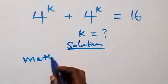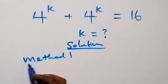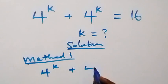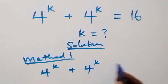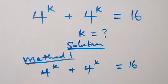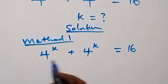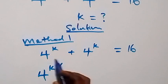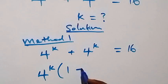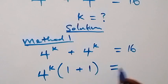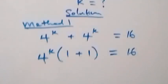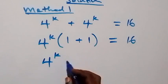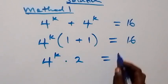Method 1: We have 4 raised to power k plus 4 raised to power k equals to 16. Let's factor 4 raised to power k out. So we have 4 raised to power k into bracket, and we are left with 1 plus 1, which equals 16. This gives us 4 raised to power k times 2 equals 16.